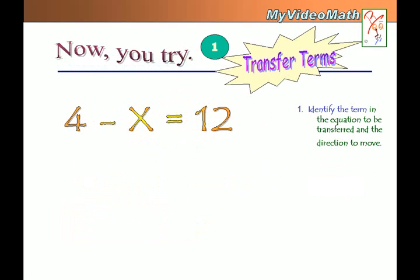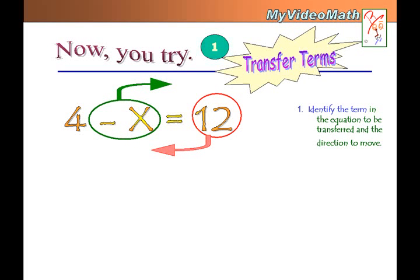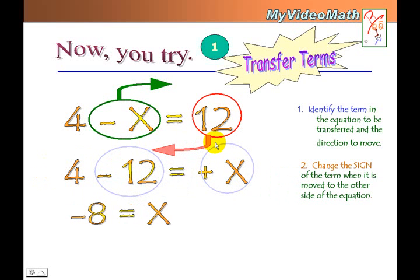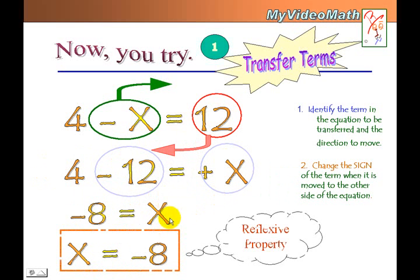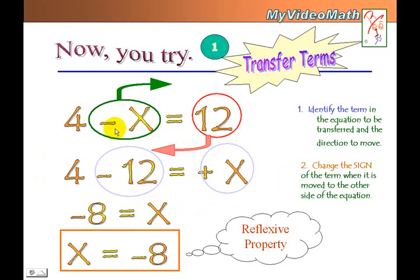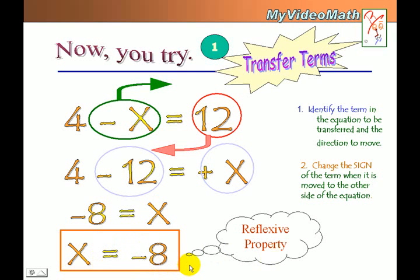Now you try. Identify the term to transfer to the other side. I want to transfer two things: negative x and 12, because I want to have x, not negative x, on one side of the equation. When I have negative 8 equals x, I can use the reflexive property to flip them, giving x equals negative 8 as my final answer.